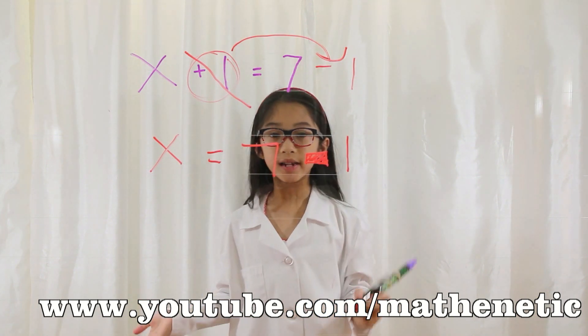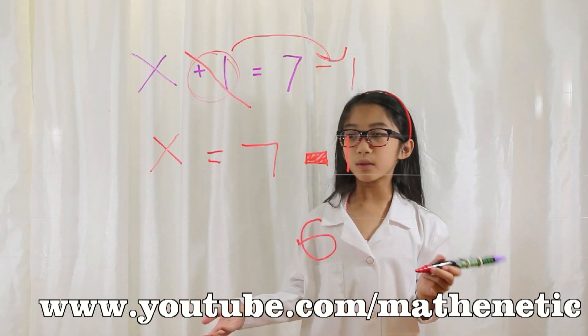Well, 7 minus 1 is six. Now you bring the x and the equal sign down.